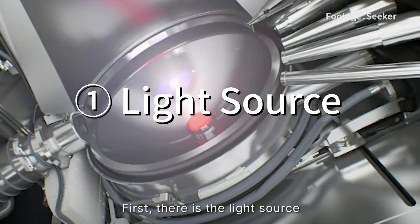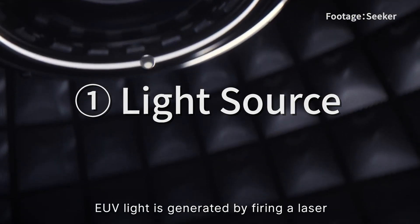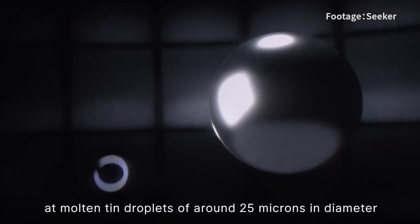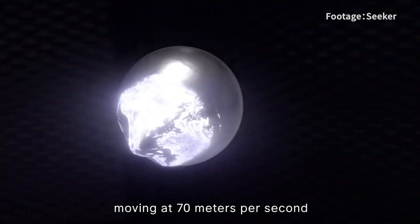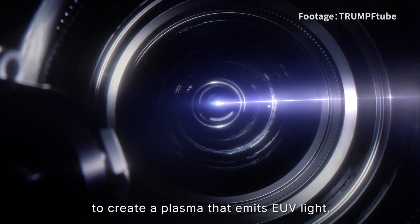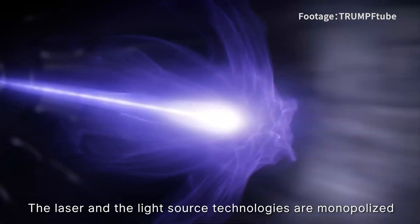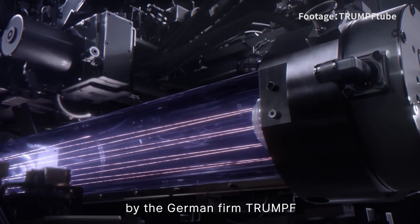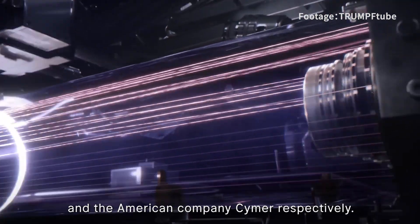First, there is the light source. EUV light is generated by firing a laser at molten tin droplets of around 25 microns in diameter, which move at 70 meters per second to create a plasma that emits EUV light. The laser and light source technologies are monopolized by the German firm Trumpf and the American company Cymer, respectively.